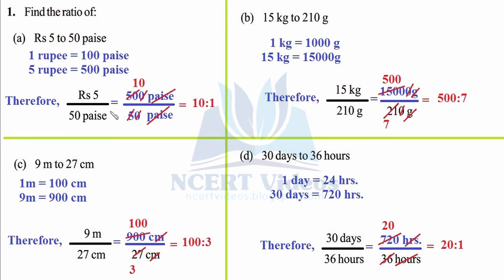Part (b): 15 kg to 210 grams. The units are not the same, but the conversion factor is 1 kilogram equals 1000 grams. We convert to lower units because converting grams to kilograms would give fractions or decimals. So 15 kg equals 15,000 grams. Writing the ratio: 15,000 grams divided by 210 grams — the units cancel, making it unitless. Cancelling three zeros and then dividing by 3: 3 sevens are 21, 3 fives are 15.